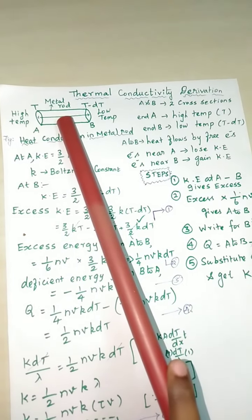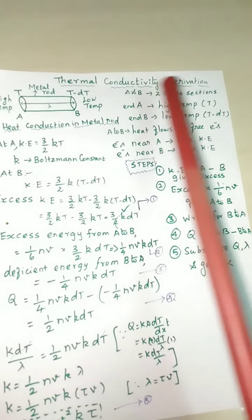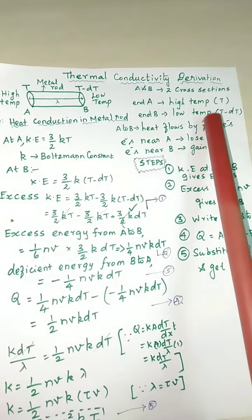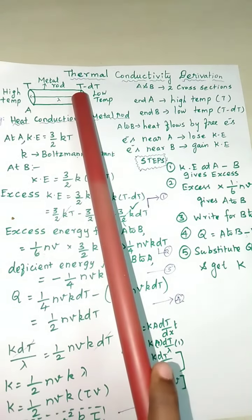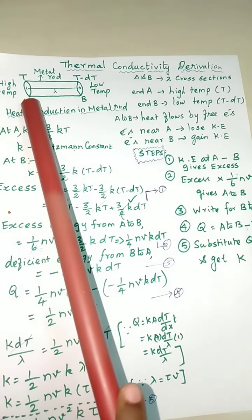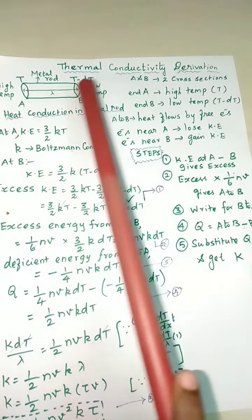Then the whole length or distance we have to mark as lambda. A and B are the two cross sections. End A the temperature is T, end B the temperature is T minus DT.